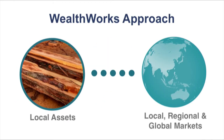The WealthWorks approach makes progress towards these goals by finding opportunities to develop a region's assets to meet a market demand. For example, juniper wood, which is overgrown in eastern Oregon, is being harvested to produce landscaping and building materials that are meeting a growing market demand for sustainable wood products. Products that are rooted in the local assets of a region are connected to markets that can be local, regional, or even global. WealthWorks engages a wide range of stakeholders to develop the linkages between local assets and markets. And this is where the concept of a value chain comes in.